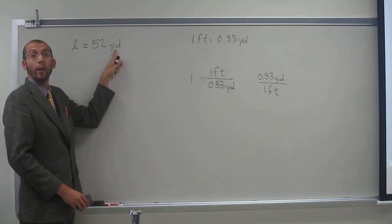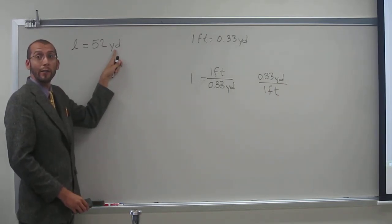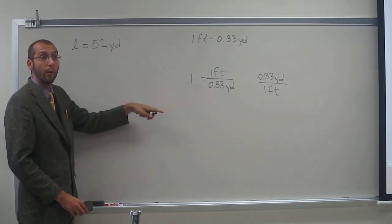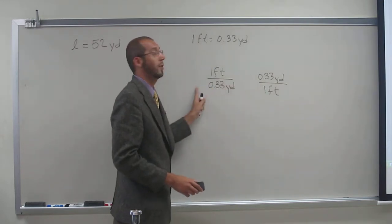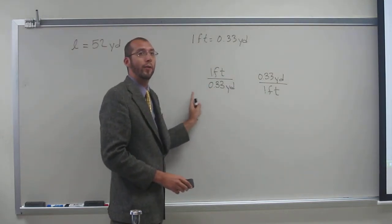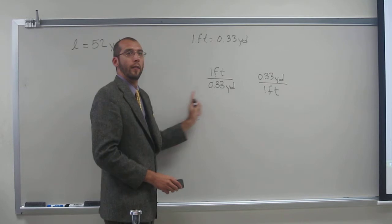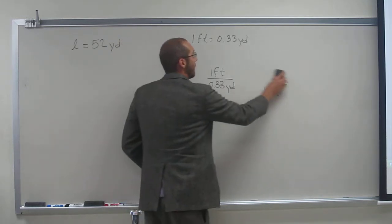So yards is in the numerator here, so we want to cancel that out and get feet, so we want yards to be in the denominator for what we're multiplying. So which one of these two conversion factors has yards in the denominator, left or right? Left, right, so let's just erase this one.